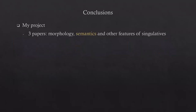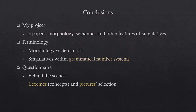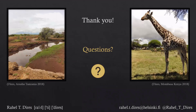In conclusion: I told you about my project, divided into three papers — morphology (now submitted), semantics (in progress), and other features of singulatives. The terminology must be divided into morphology and semantics, and singulatives need to be looked at within grammatical number systems. I showed you the questionnaire — the behind-the-scenes process, the lexeme and picture selection, and the possible positive and negative outcomes. Negative outcomes are not entirely negative, because I can learn from these mistakes and make a better questionnaire in the future, or help someone else avoid the same mistakes. Thank you so much.